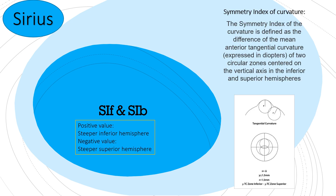The next Cirrus index is SIF and SIB — the symmetry index of curvature. Positive values mean steeper inferior hemisphere, and negative values mean steeper superior hemisphere. This is a difficult index to interpret.